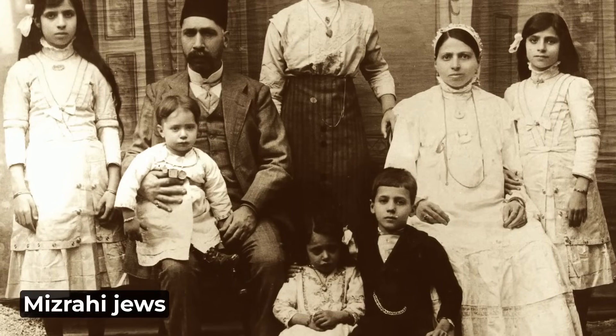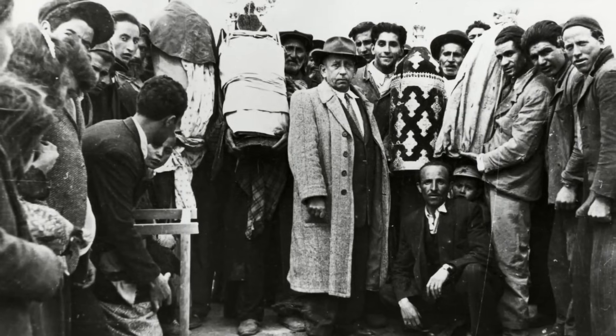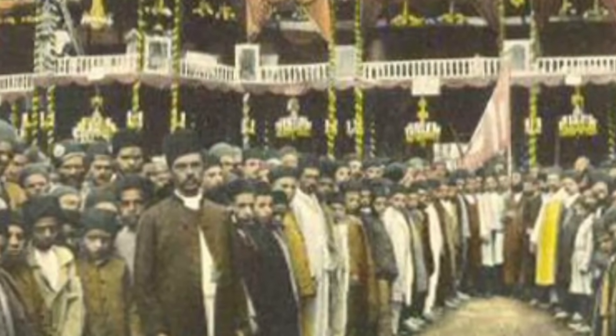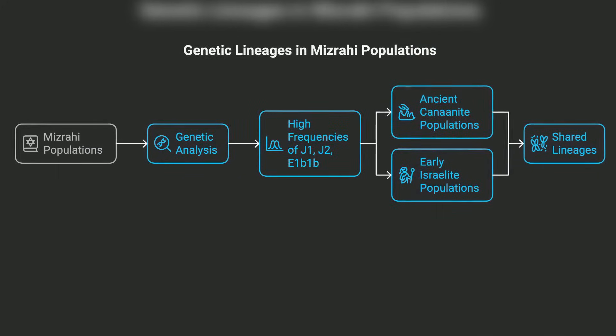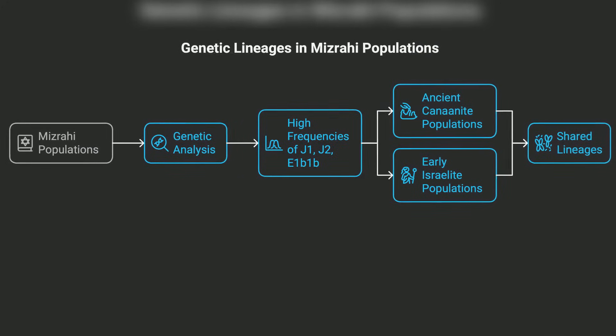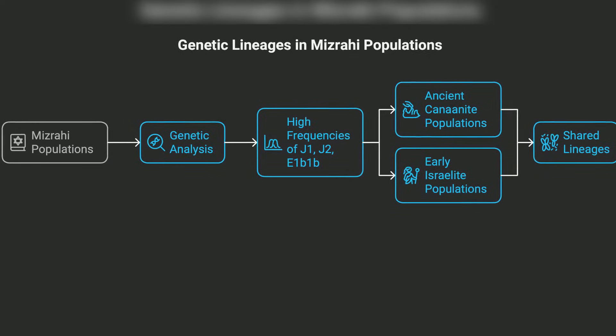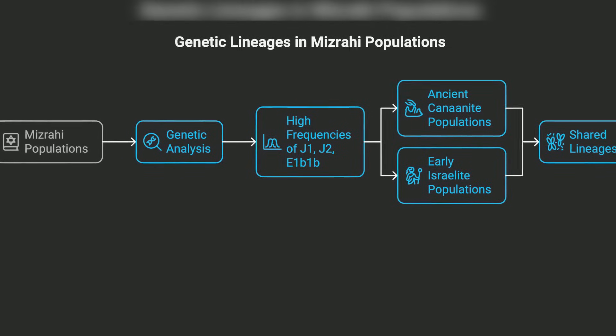The Jewish communities of the Middle East and North Africa, collectively known as Mizrahi Jews, represent the populations with the strongest genetic continuity to ancient Levantine ancestry. These communities, which include Iraqi, Iranian, Syrian, Yemeni, and North African Jewish populations, maintained continuous presence in regions adjacent to or encompassing the ancient Jewish homeland, resulting in genetic profiles that most closely resemble reconstructed ancient Judean ancestry. Genetic analysis of Mizrahi populations reveals remarkably high frequencies of Y-chromosomal haplogroups J1, J2, and E1b1b — the same lineages that dominated ancient Canaanite and early Israelite populations. The persistence of these lineages at high frequencies, often exceeding 70–80% of total Y-chromosomal diversity in some populations, demonstrates exceptional genetic continuity across more than two millennia of diaspora existence.